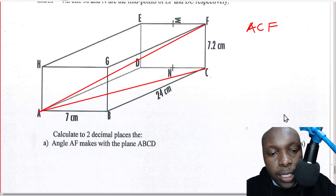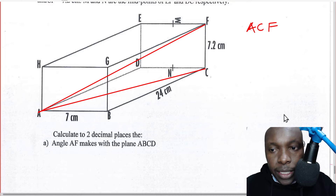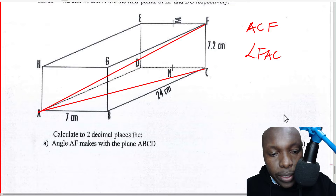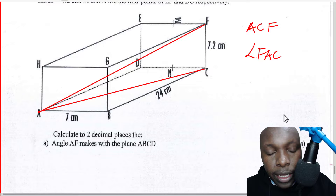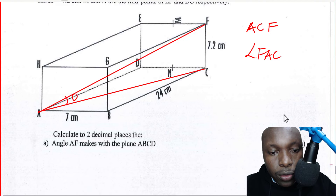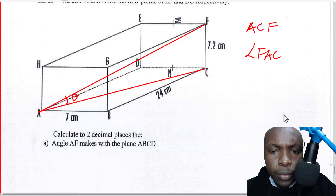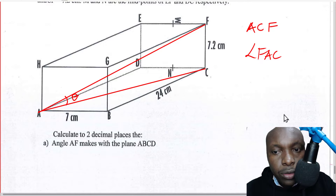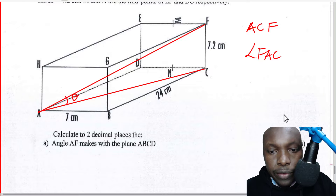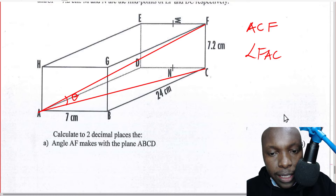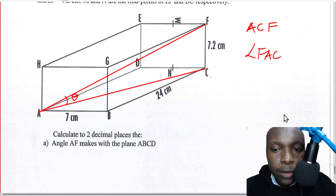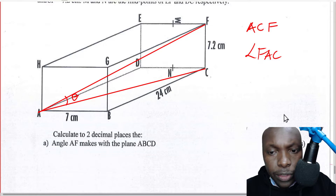You realize that the projection, the shadow, will be AC. There is line AC, and you now have a right angle triangle ACF. The angle now required is angle FAC, which is the angle between line AF and plane ABCD. To find this angle, we already have FC, so we need to get at least one more side in order to use trigonometric ratios.